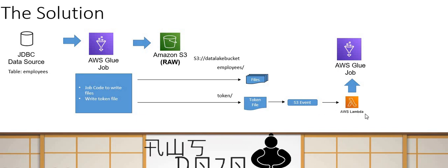I now hook my S3 event to this single token file. The extended job code first writes the data files, then writes the token file. On the write of the token file, the S3 event triggers, which calls the Lambda function, which calls a single Glue job execution. That Glue job then processes all the files and writes to the target location. I'm decoupling S3 events from the data file writes, so I don't end up with 3, 5, 10, or 100 events depending on how many data files are written.